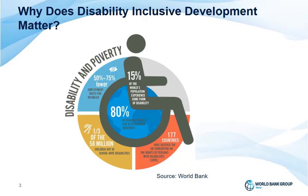This number is expected to rise due to factors such as the percentage increase in aging population, war and conflict, and the impacts of climate change. It matters for development because persons with disabilities consistently fare less well than their non-disabled peers. They generally have poorer health, lower education achievements, lower employment levels, and higher rates of poverty than persons without disabilities.